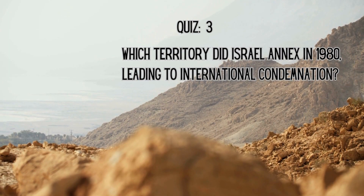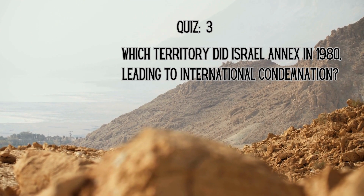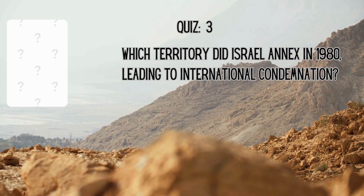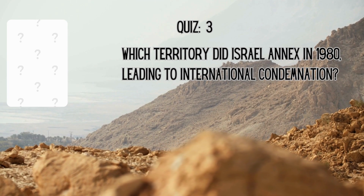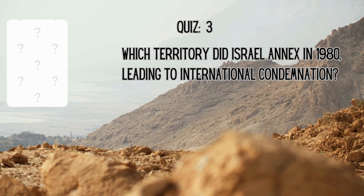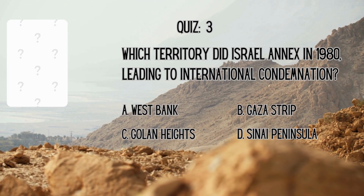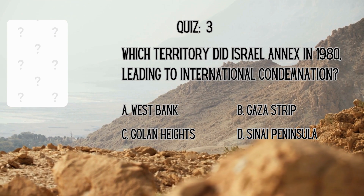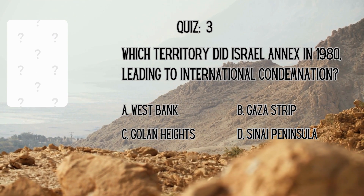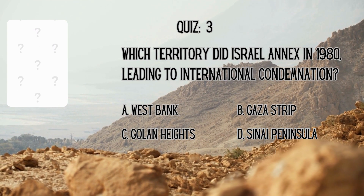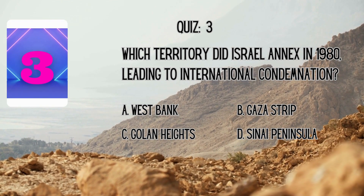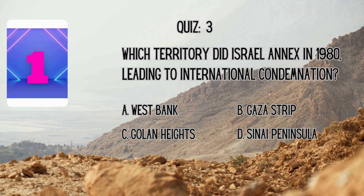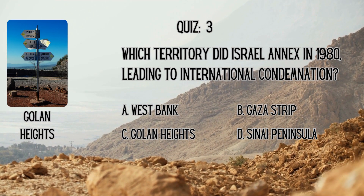Let's move on to territories and borders. Which territory did Israel annex in 1980, leading to international condemnation? Is it A. West Bank, B. Gaza Strip, C. Golan Heights, or D. Sinai Peninsula? The correct answer is Golan Heights.